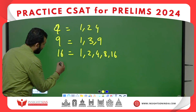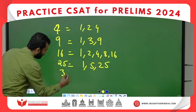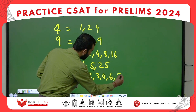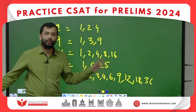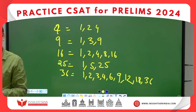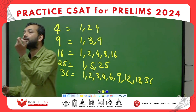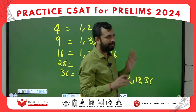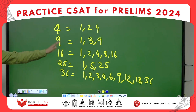For 25: factors are 1, 5, 25. For 36: factors are 1, 2, 3, 4, 6, 9, 12, 18, 36. Half of the factors will be less than the square root of the number, and half will be more than the square root. That is why whenever you are checking whether a number is prime, you take the square root of the number and only check divisibility by prime numbers below that square root.